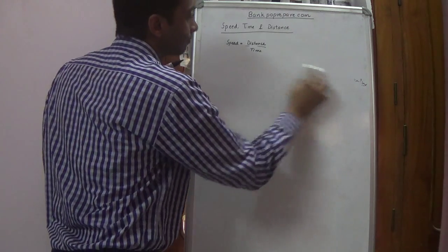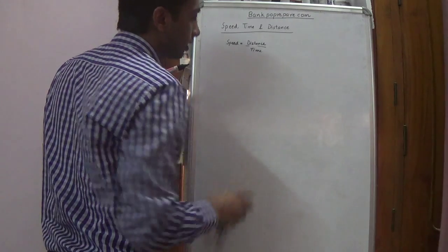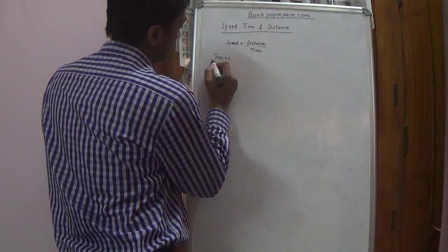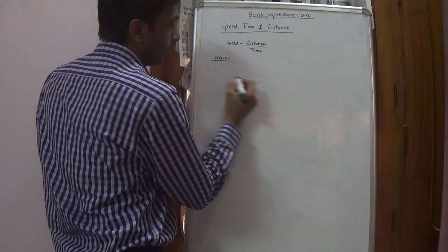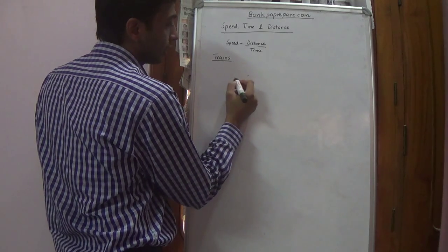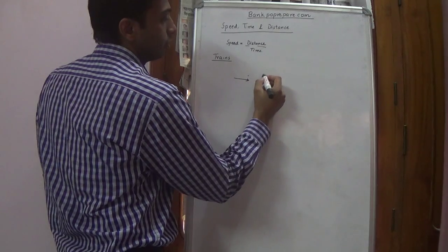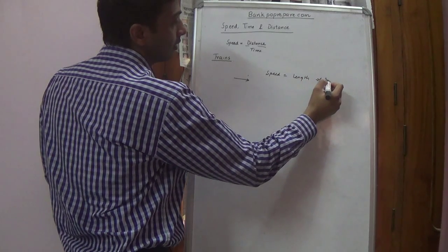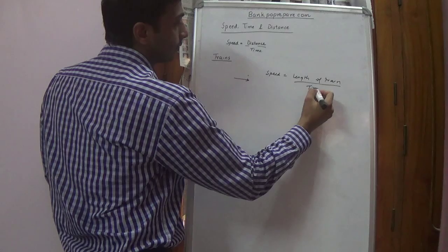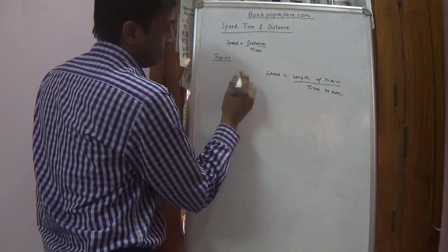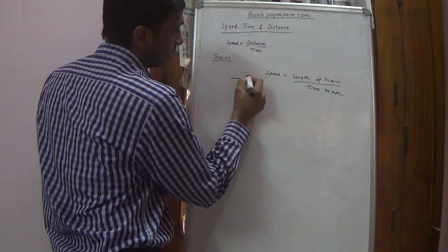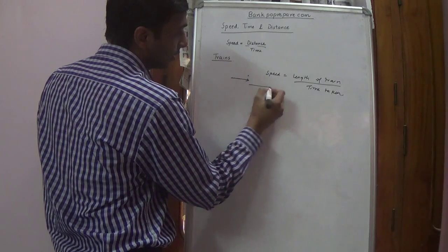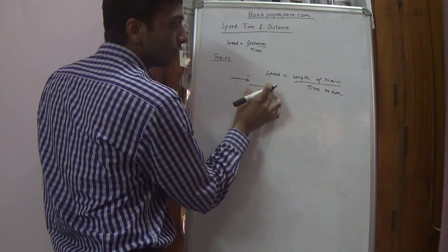The second major type of question we would see from this topic is based on trains. So there is a pole or a single stationary person and a train is passing. The speed of the train is equal to the length of the train divided by the time taken. Because the train has to cover its own length to completely cross that stationary point.